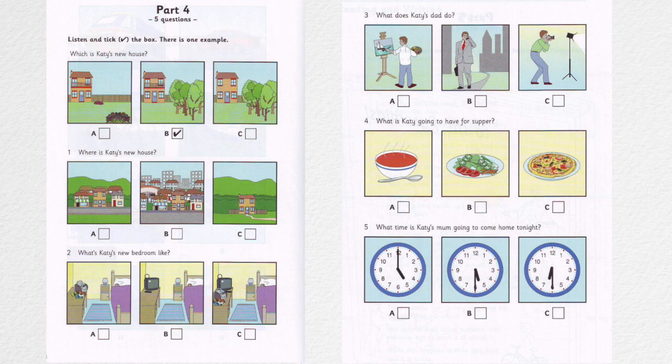2. What's Katie's new bedroom like? My new bedroom is very nice. I've got a desk in it. I can do my homework there. Have you got a television, too? No, but I've got a CD player. I love listening to music. That sounds nice.